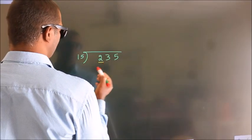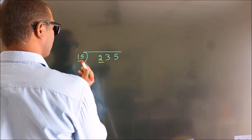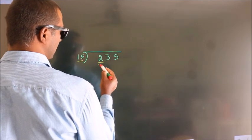Here we have 2. Here 15. 2 smaller than 15. So we should take 2 numbers.